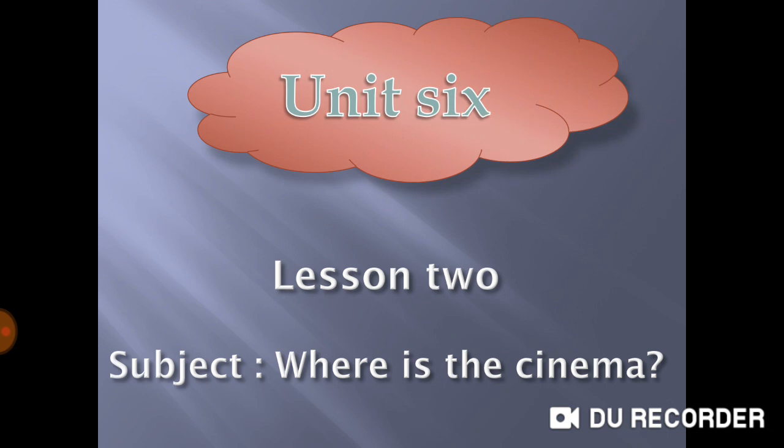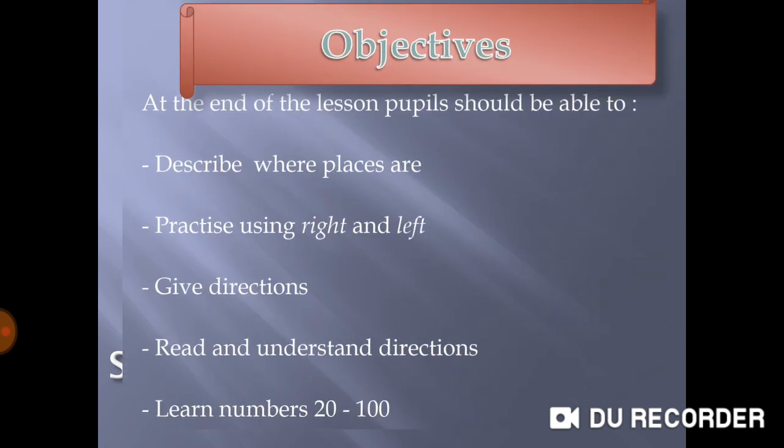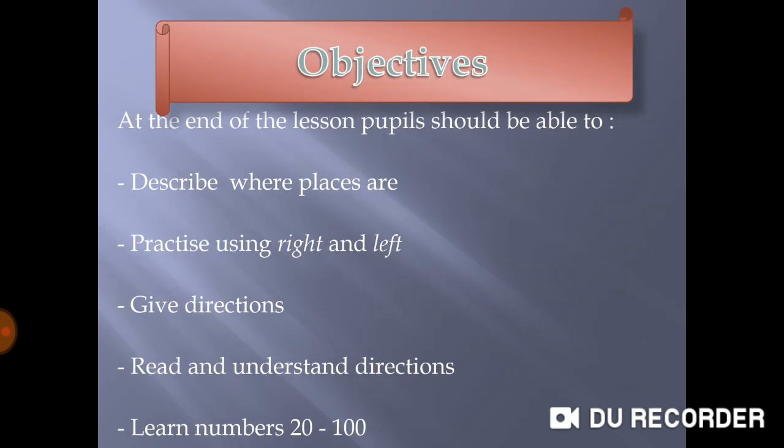Unit 6, Lesson 2. Subject: Where is the cinema? At the end of the lesson, pupils should be able to: describe where places are, practice using right and left, give directions, read and understand directions, and learn numbers from 20 to 100.